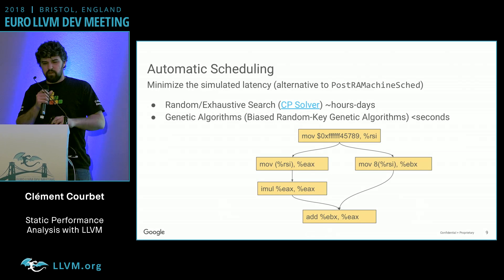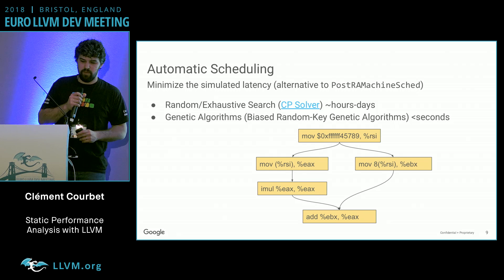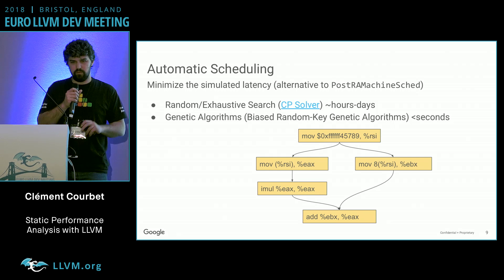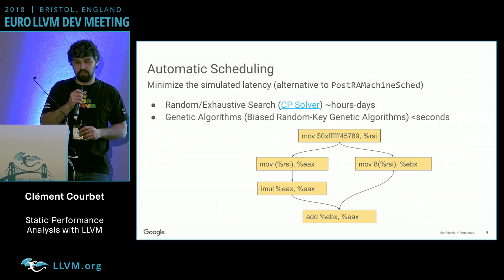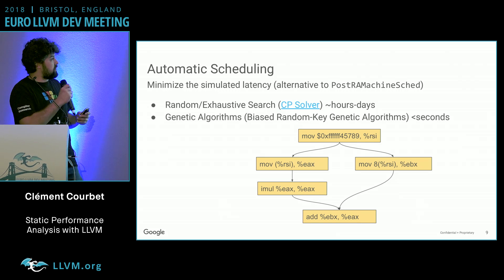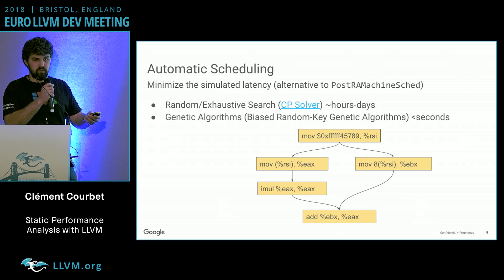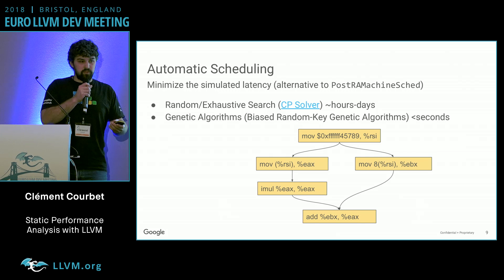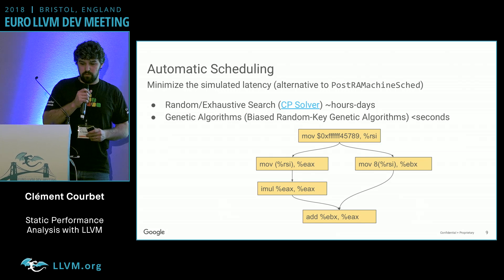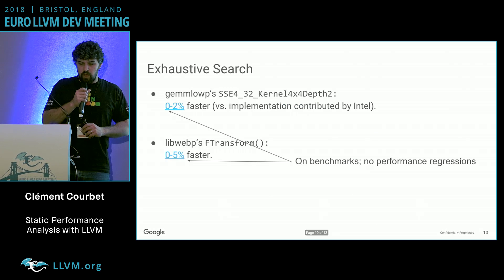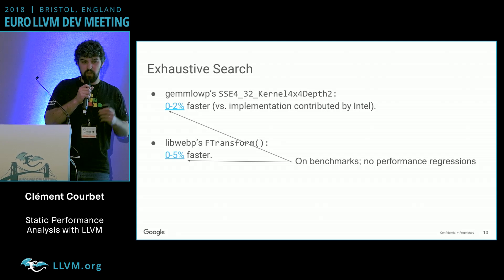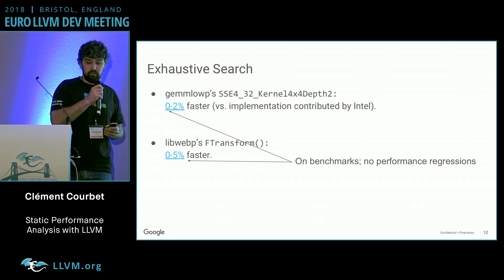We also tried automatic scheduling. The goal here is to minimize the simulated latency of the block — essentially an alternative to a post-RA machine scheduler, but we have more time to do it. We tried a very simple approach of random scheduling to see what the latency is, and another one using a genetic algorithm. The exhaustive search actually worked quite well.